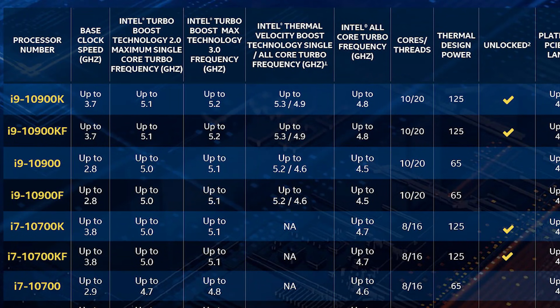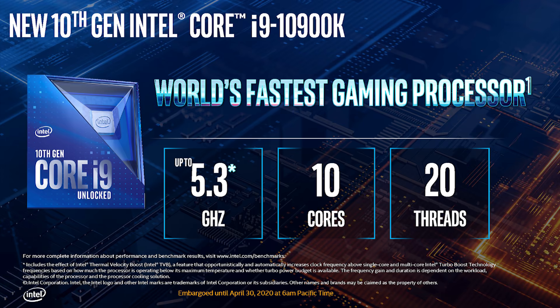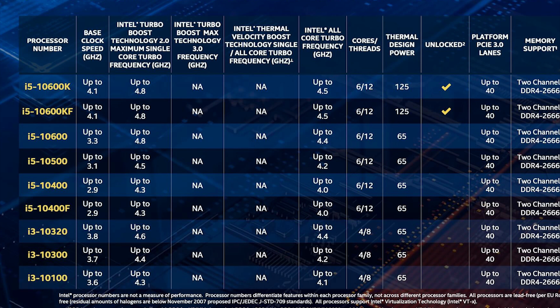For i7 and i9 models, boost clock reaches 5 GHz via Thermal Velocity Boost. The i9 turbo clock speed boost adds an extra 200 MHz. For i5 and i3 models using turbo boost, we can push above 4.6 GHz. The top i9 can push above 5.3 GHz with overclocking.